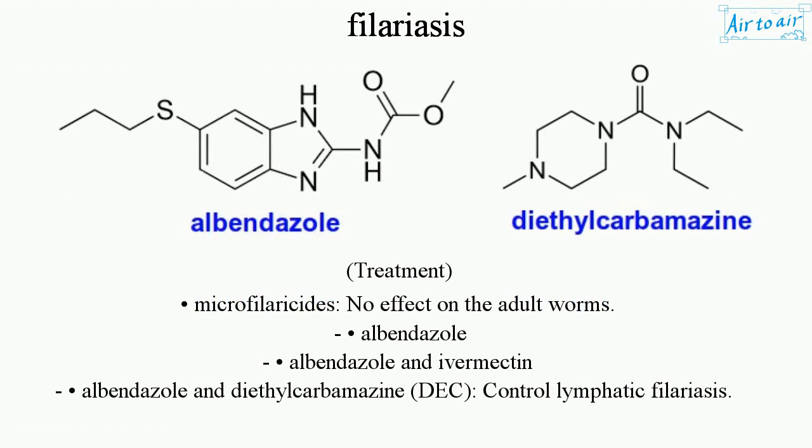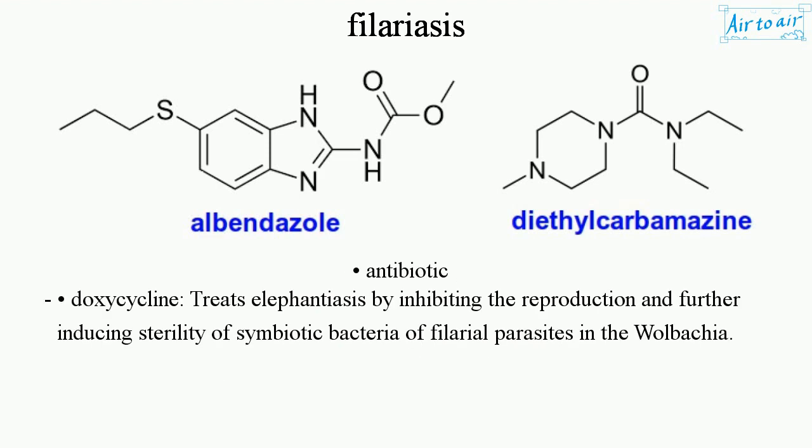Treatment. Microfilarocides have no effect on the adult worms. Albendazole, albendazole and ivermectin, or albendazole and diethylcarbamazine (DEC) control lymphatic filariasis. Antibiotic doxycycline treats elephantiasis by inhibiting the reproduction and inducing sterility of symbiotic bacteria of filarial parasites, specifically Wolbachia.